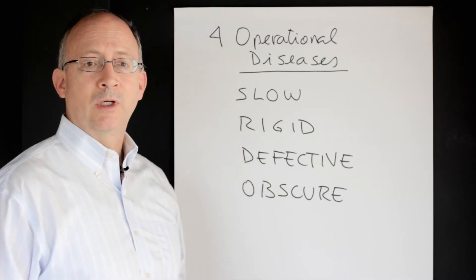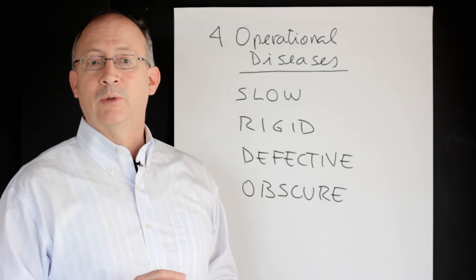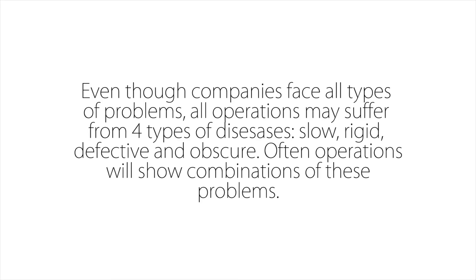But understanding that these really are instances of these four types of problems - slow, rigid, defective, and obscure, or a combination of these - will help us make sense of them and also then put us in the right position to begin solving these types of problems.